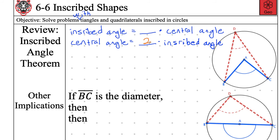And then the first formula — someone new volunteer — yes, Gunner. Not quite. If I have a central angle, I'm not getting bigger to get to the inscribed angle, I should be getting smaller. Yes — one half. Thank you. So the inscribed angle is one half of the central angle, or you can say divide by two.